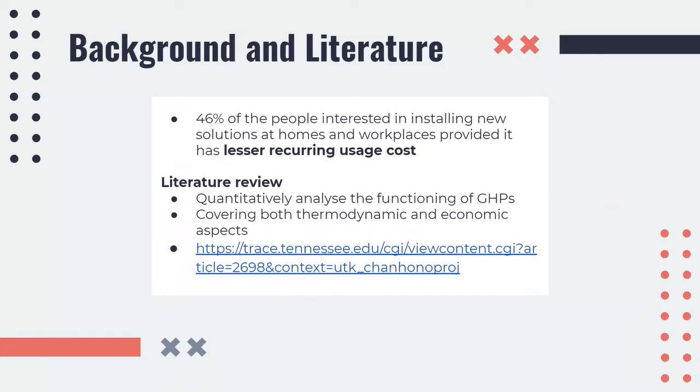According to a survey we conducted, 46% of people were interested in installing a new solution at both homes and workplaces provided it has less recurring usage costs. Geothermal heat pumps seem the ideal solution. However, they have high installation costs. Thus, we looked into optimizing geothermal heat pumps so that the investment is paid off in the shortest amount of time possible. The link given in this slide is that of a research paper that gave us a wide perspective on how we can quantitatively analyze the factors associated with the functioning of geothermal heat pumps. The paper covers both thermodynamic and economic quantities that are essential when dealing with geothermal heat pumps, thus giving us a larger picture of where one can start.